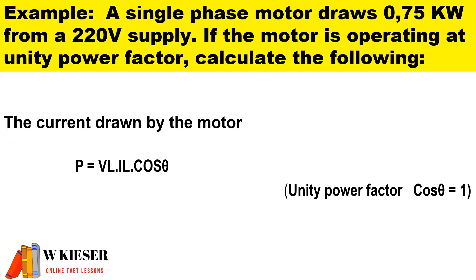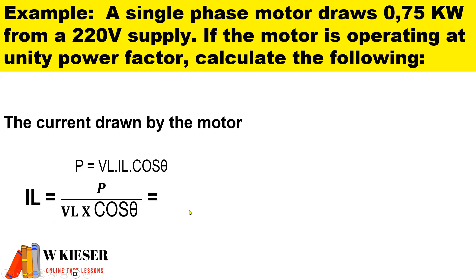To calculate the current drawn by the motor, just a reminder of the formula for true power: it is line voltage multiplied by line current multiplied by power factor. If we have unity power factor cos theta is equal to 1. So to calculate the line current is the power of 750 watts divided by 220 volts and the power factor of 1 and we get 3.409 amps.